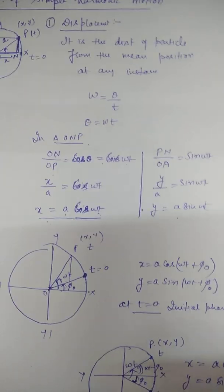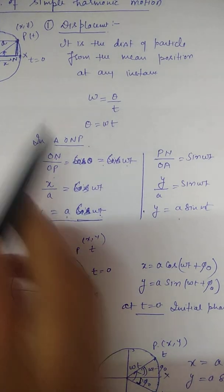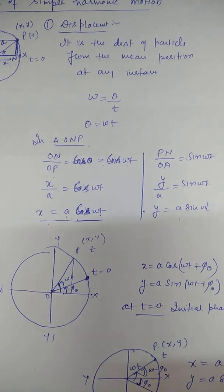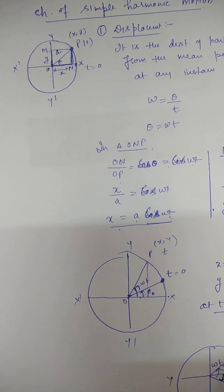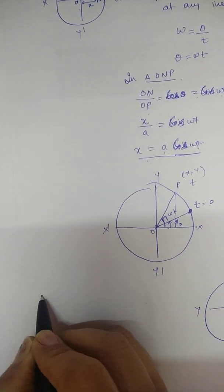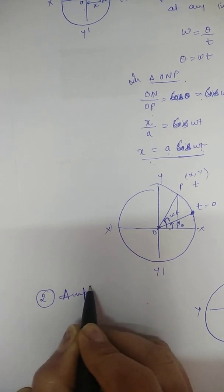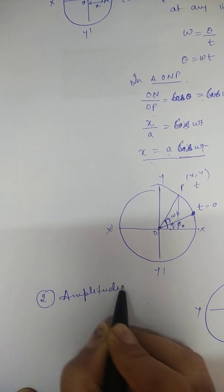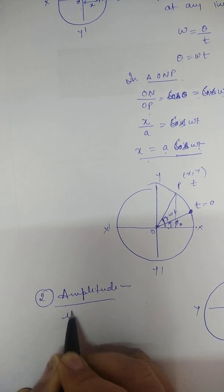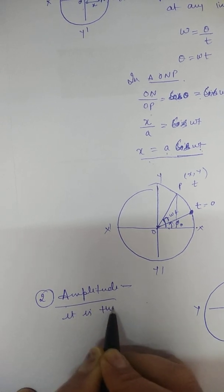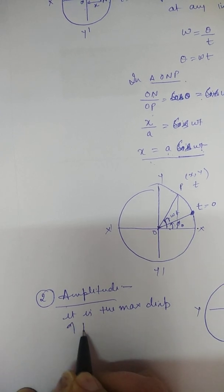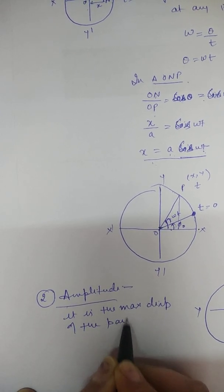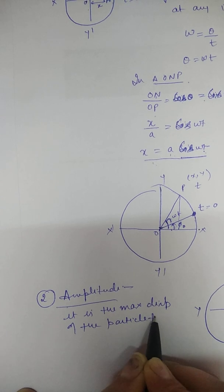That completes displacement — it is the distance of the particle from the mean position at any instant. The next characteristic is amplitude. Amplitude is the maximum displacement of the particle from the mean position.